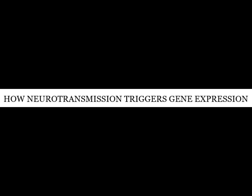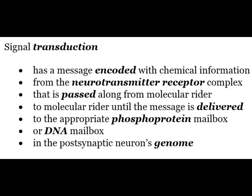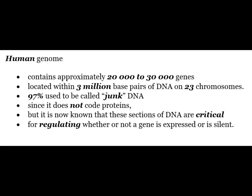Signal transduction has a message encoded with chemical information from the neurotransmitter receptor complex that is passed along from a molecular rider to another molecular rider until the message is delivered to the appropriate phosphoprotein mailbox or DNA mailbox in the postsynaptic genome. The human genome contains approximately 20,000 to 30,000 genes located within 3 million base pairs of DNA on 23 chromosomes. 97% of this was called junk DNA because it does not code for proteins, but it is now known that these sections of DNA are critical for regulating whether or not a gene is expressed or is silent.